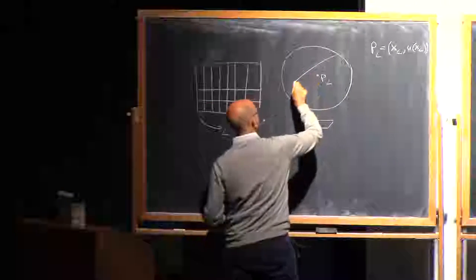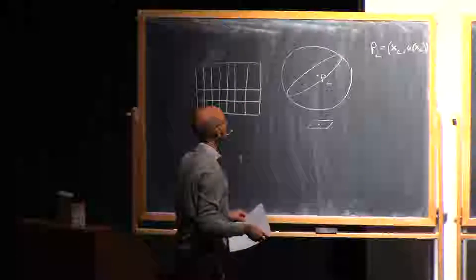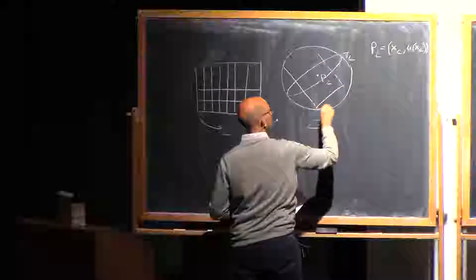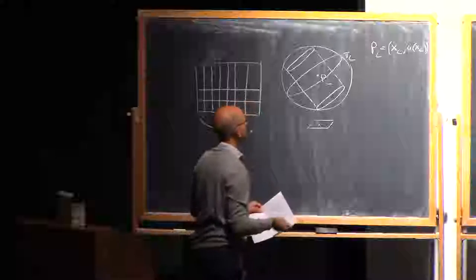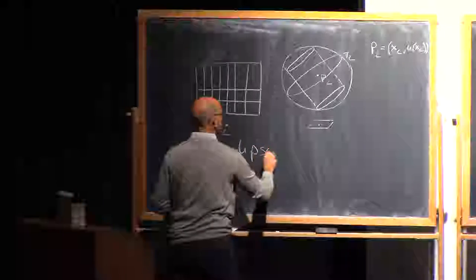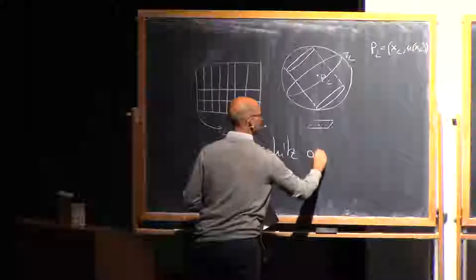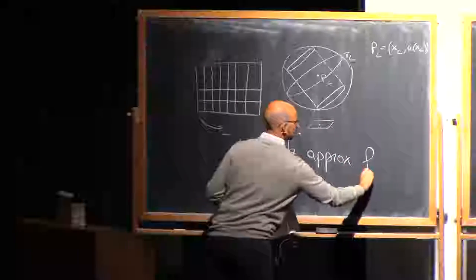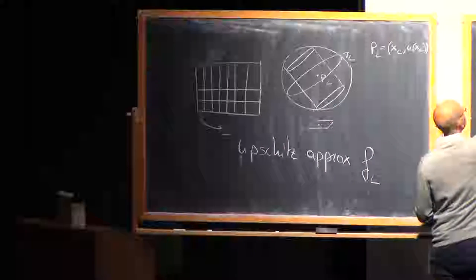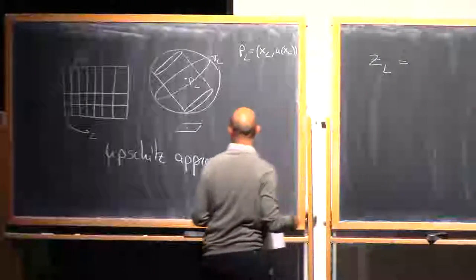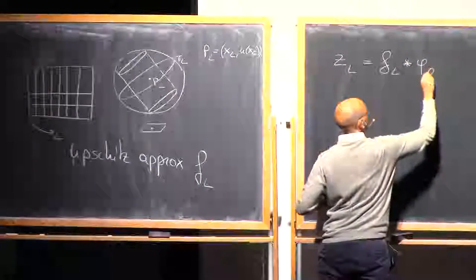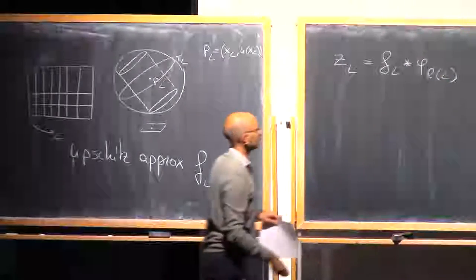Then I choose a plane which is optimizing the excess, so this is displaced by L. I look at the graph in a tilted cylinder. In the tilted cylinder I take the approximation, so the Lipschitz approximation FL.